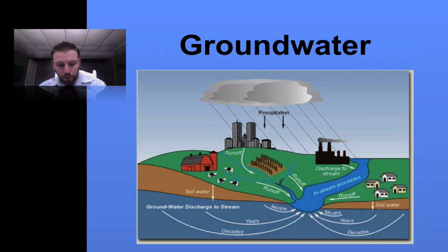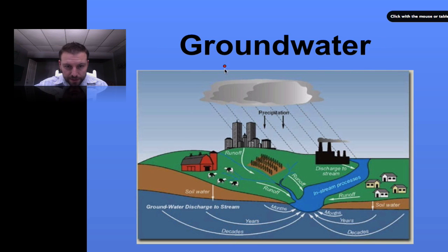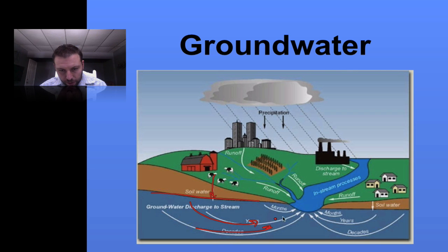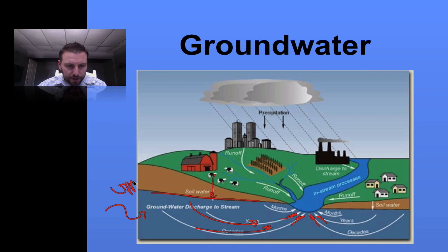Looking at groundwater here, we can see that as we go through the water cycle, we have precipitation — some ends up as runoff, but in this area we have infiltration. As it infiltrates and percolates through the ground, it fills up our zone of saturation underneath the water table, and the groundwater flow moves basically towards the streams. This is very similar to our upper glacial aquifer.